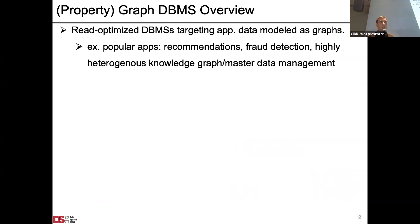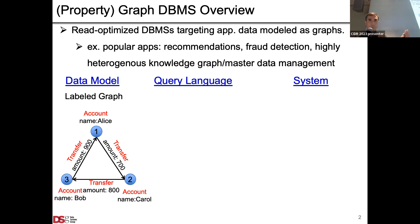I'll start by telling you my overall general position on graph database management systems. In one slide, these are read optimized analytical database management systems targeting applications where data is modeled as a graph. Example popular applications nowadays are in recommendations, fraud detection, and management of highly heterogeneous knowledge graphs and master data.